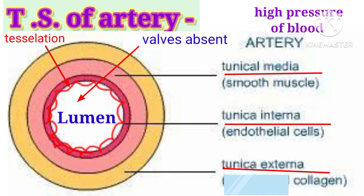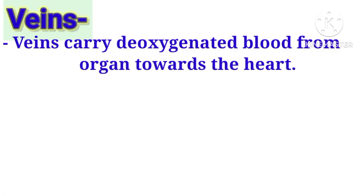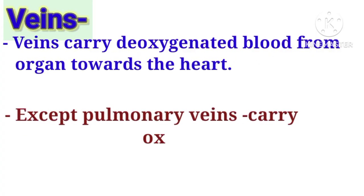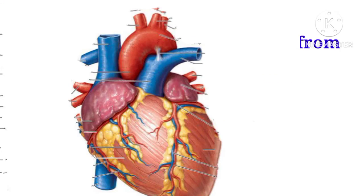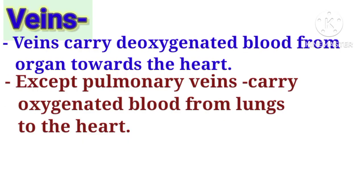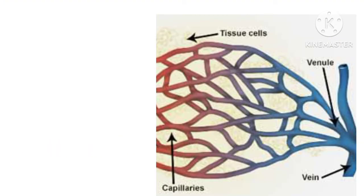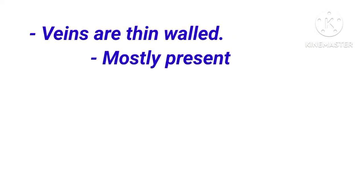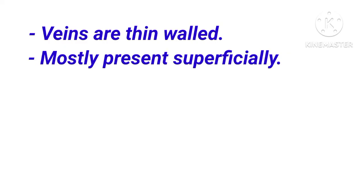The arterial lumen has thick walls; arteries have no valves and blood flows through arteries rapidly and with high blood pressure. Veins carry deoxygenated blood from organs towards the heart, except pulmonary veins, which carry oxygenated blood from the lungs to the heart. Many capillaries join to form veins. Veins have thin walls and are mostly present superficially in the body.